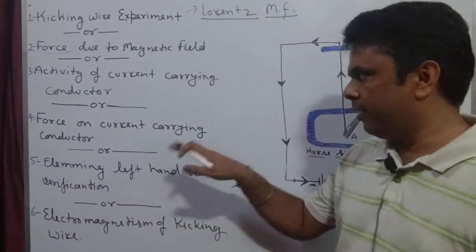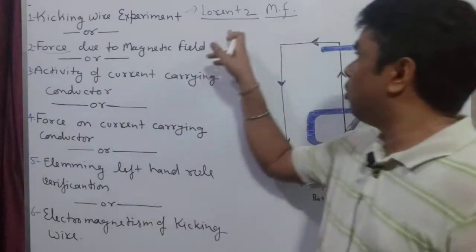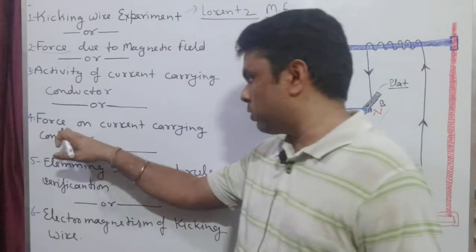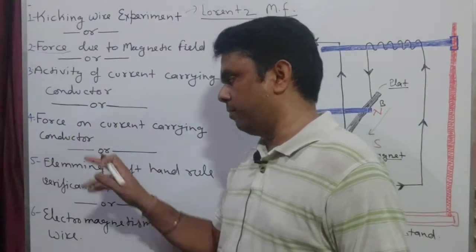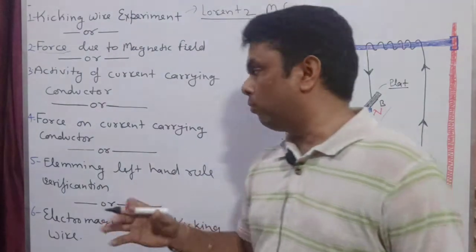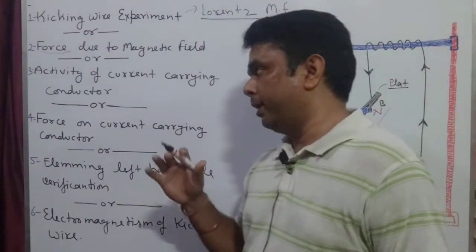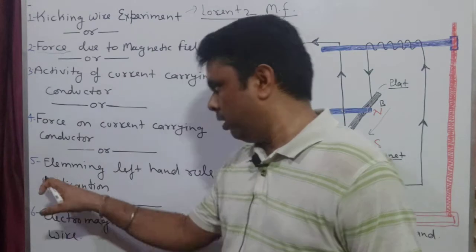The fourth one is the force on a current-carrying conductor — again, the Lorentz magnetic force. So this force on the current-carrying conductor or current-carrying plate gives us a kick. That makes our four kicks.